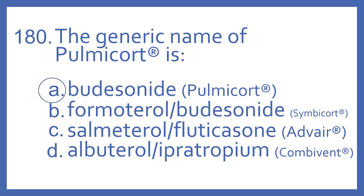Formoterol with budesonide is the generic name for Symbicort, which is a beta-2 bronchodilator and steroid combination. Salmeterol with fluticasone is the generic name for Advair, which is also a beta-2 bronchodilator and steroid combination.